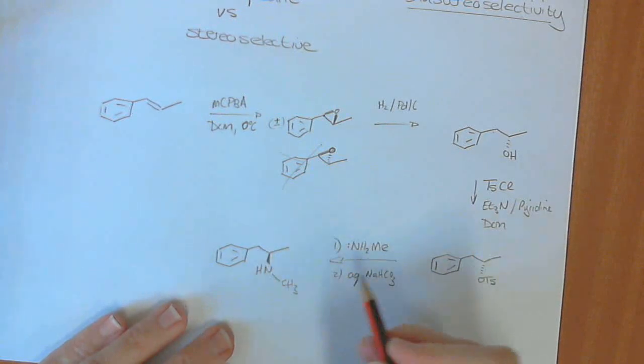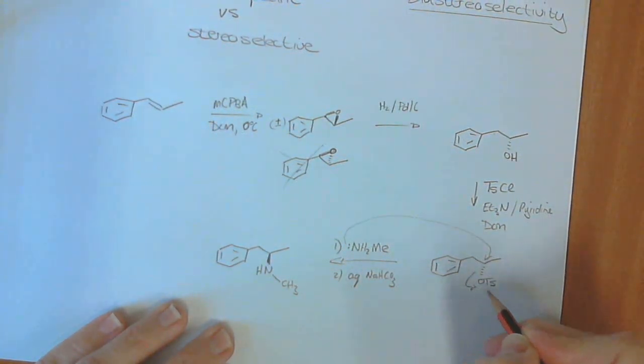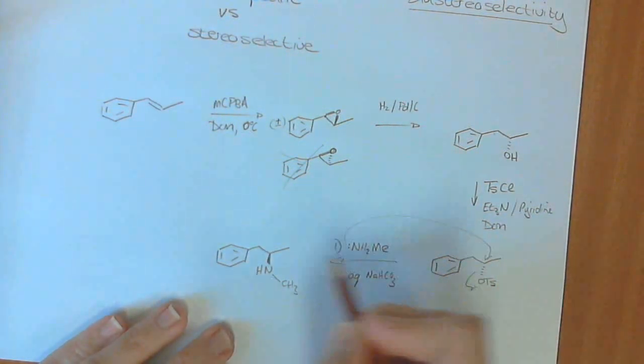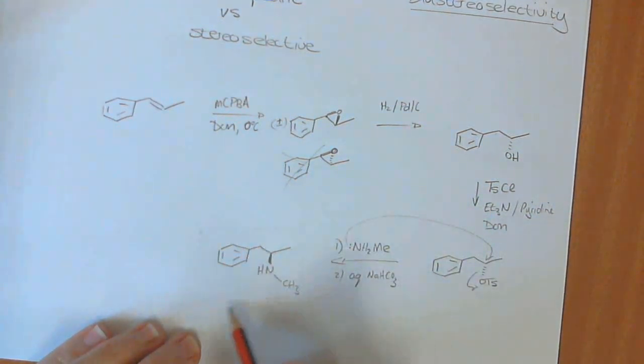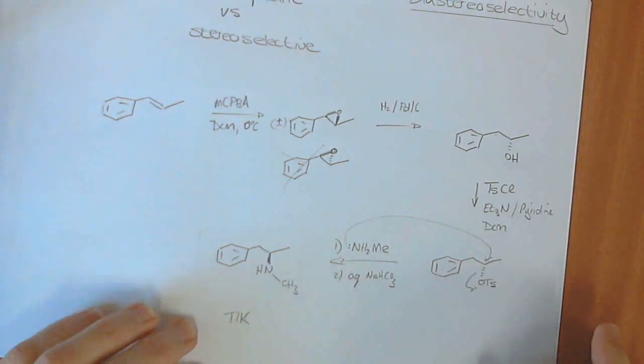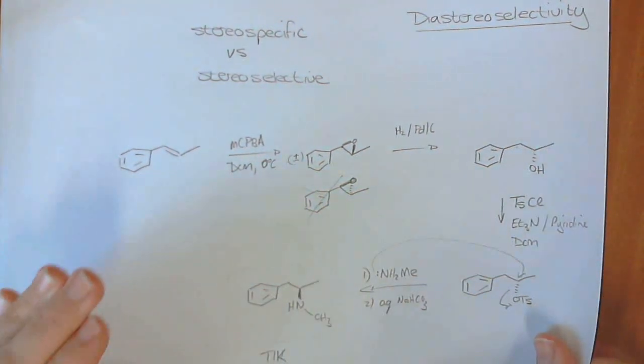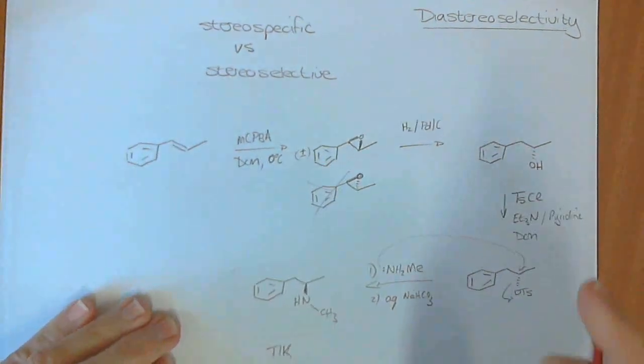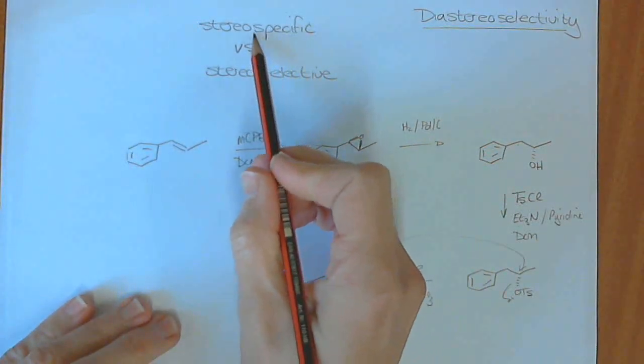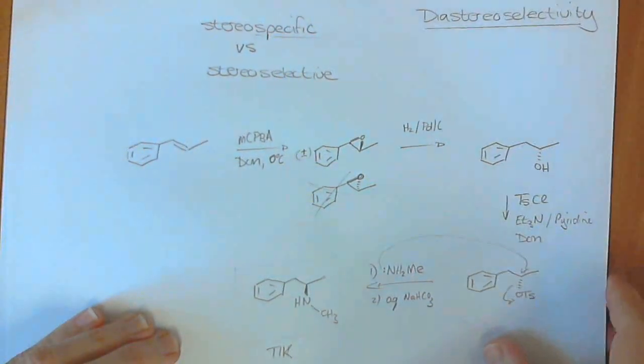It has to be an inversion because the nucleophile, as it comes in, it must come in from behind the leaving group. And you get an inversion of the stereochemistry. And then we make this compound over here, which is a tick. Please don't make this compound. So that's an example of a substitution reaction, SN2, which is stereospecific because it has to be an inversion of the stereochemistry.